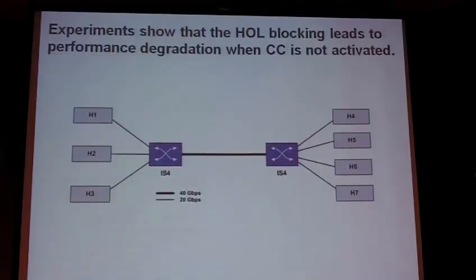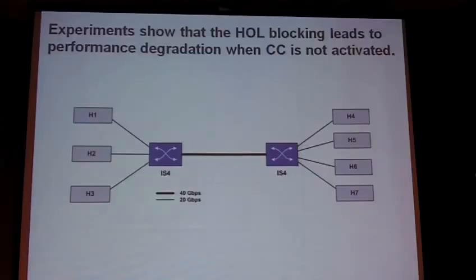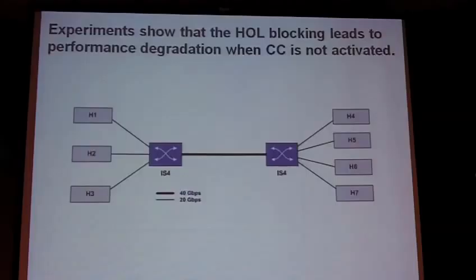This is the equipment we have in our lab. It consists of seven hosts and two switches. The switches are QDR-capable, and the hosts are connected with DDR links to the two switches. The link in between is QDR at 40 gigabits. We have a lot of bandwidth here, but we will see that this bandwidth doesn't really help improve the congestion problem.